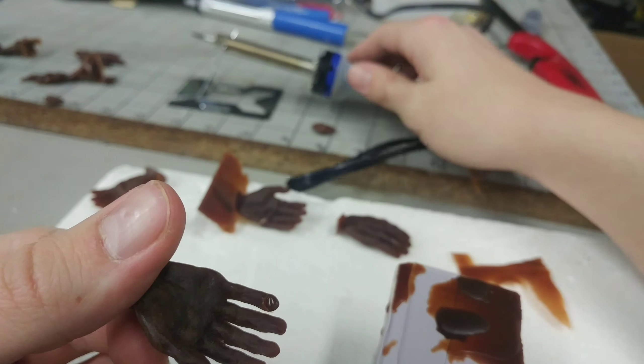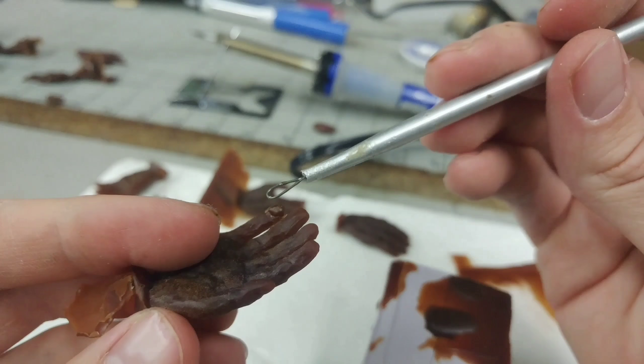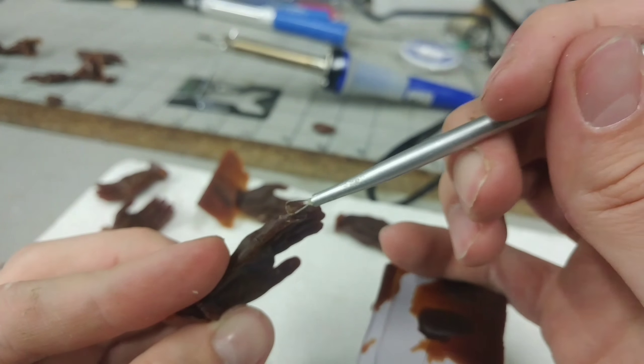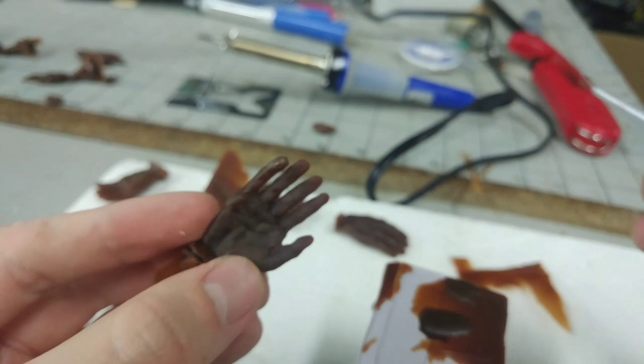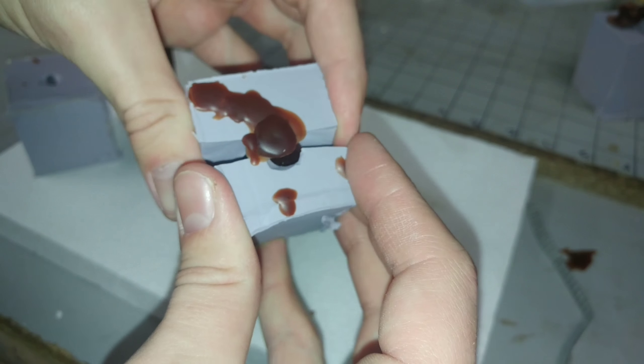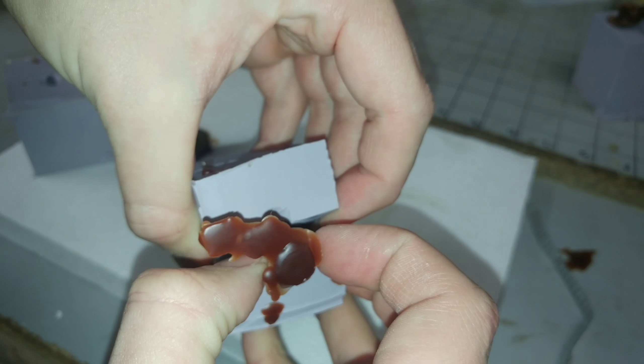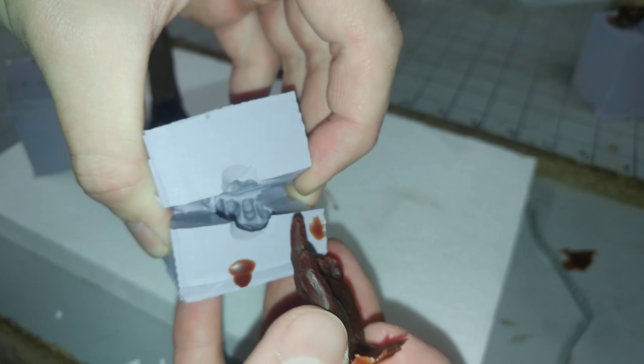No matter how good your mold is, you have to chase the wax, so to speak, where you have to fix all the imperfections and hide any lines you might see from the different parts of the mold. I'm just preparing the wax for metal because it's all going to be cast and everything will be permanent after that, but the problem got worse.